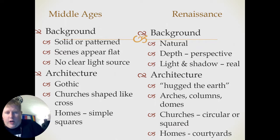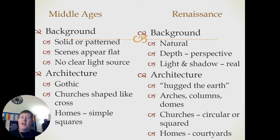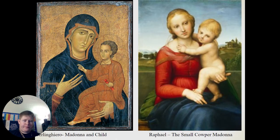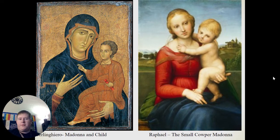We can do the same comparison for artistic styles. Middle Ages art is more solid, patterned — scenes appeared flat with no clear light source. Renaissance art, on the other hand, was more natural, had depth and perspective, and used light and shadows. We can also compare the architecture: Middle Ages were more Gothic, churches were shaped like crosses, and homes were simple squares. Whereas in the Renaissance, architecture was designed to hug the earth — they changed the building to match the landscape, churches were circular or squared, and many homes had their own courtyards. Here's a comparison of a famous Middle Ages piece of the Madonna and Child versus a painting by Raphael also depicting the Madonna and Child.